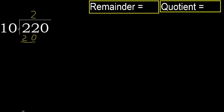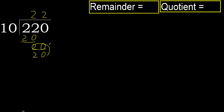Subtract: 22 minus 20 is 2. Next, bring down 20, then multiply by 2 — 20 is not greater, okay.